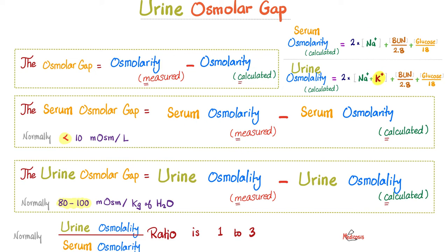What's the measured serum osmolality? Let's say I measured it in the lab and it was 293. The calculated: 2×140 + 15/3 + 100/18 — roughly 290. So 293 minus 290 equals 3. Is this less than 10? Yes — so this gap is normal. Since there is more gunk in urine, the urine osmolar gap is normally 80 to 100 milliosmol per kilogram of water.